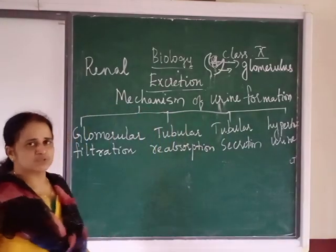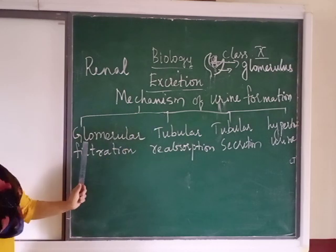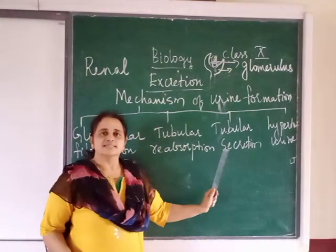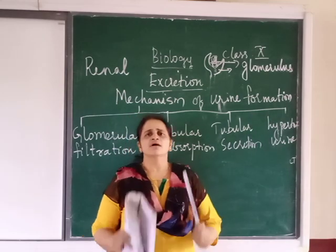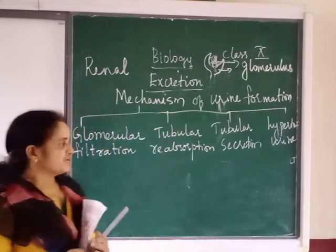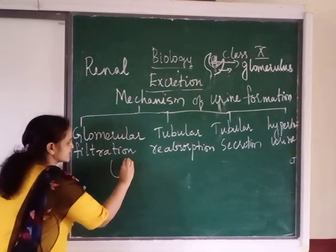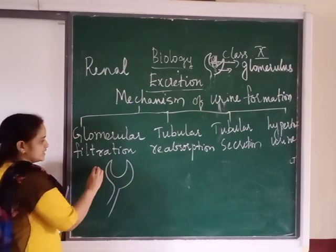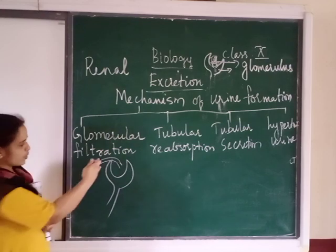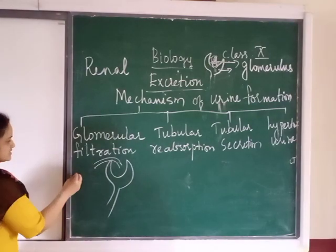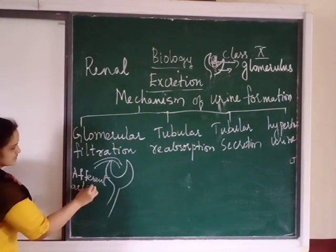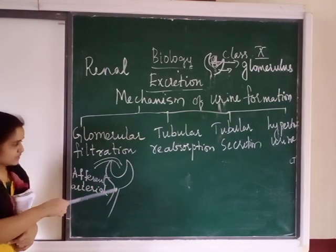Let's review: the mechanism of urine formation has four stages — Glomerular Filtration, Tubular Reabsorption, Tubular Secretion, and Formation of Hypertonic Urine or Concentration of Urine. Now, we need to remember two more terms related to the structure of the nephron. There are two arteries coming into the glomerulus, into the Bowman's capsule. When blood enters, the vessel is called the afferent arteriole — A-F-F-E-R-E-N-T. The afferent arteriole brings blood to the nephron.